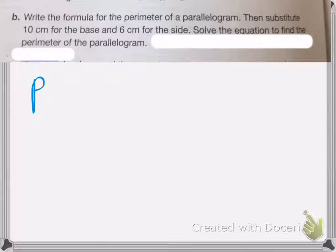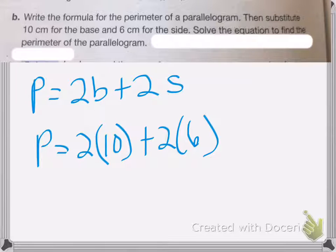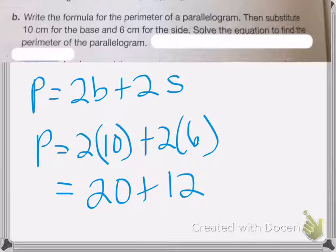So the perimeter equals 2 times the base plus 2 times the side. Plug in the numbers, 2 times 10 for the base plus 2 times 6 for the side. So 2 times 10 is 20, plus 2 times 6 is 12. So the perimeter is going to be 32 centimeters.